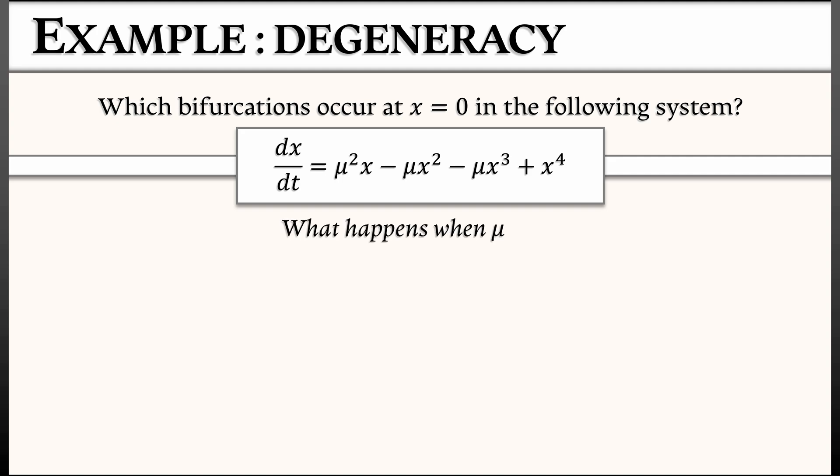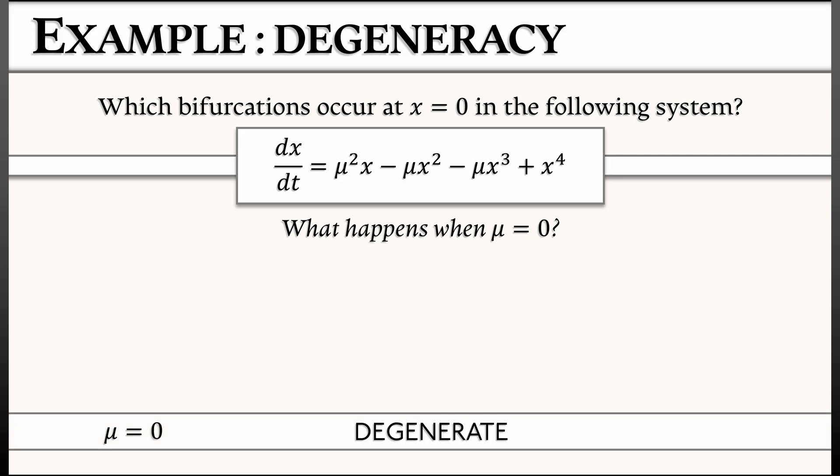But what happens when μ equals zero? Well, when μ equals zero, that linear term goes away, but the quadratic term goes away, and that cubic term goes away and you're left with an x to the fourth. That does not match any of the patterns that we have seen for saddle node, transcritical, pitchfork, none of that.